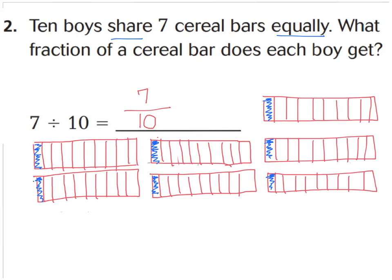Here's a picture to show you why. I drew the seven bars we're talking about, and we're dividing them equally into ten parts because there's ten boys. When I cut them into ten parts, if each boy gets one part of each bar, that's one-tenth, two-tenths, three-tenths, four-tenths, five-tenths, six-tenths, seven-tenths. This model shows you why seven divided by ten is seven-tenths.